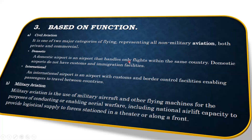In the same airport we'll have two different buildings — one for international and one for domestic. In the same airport itself we'll have a domestic arrival and departure area, and next to that building we'll have an international arrival and departures. Military aviation is the use of military aircraft and other flying machines for conducting or enabling aerial warfare, including the national airlift capacity to provide logistical supply to forces stationed in the theater or along the front.